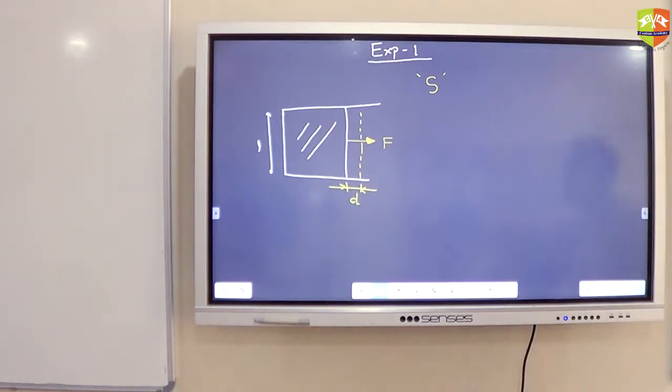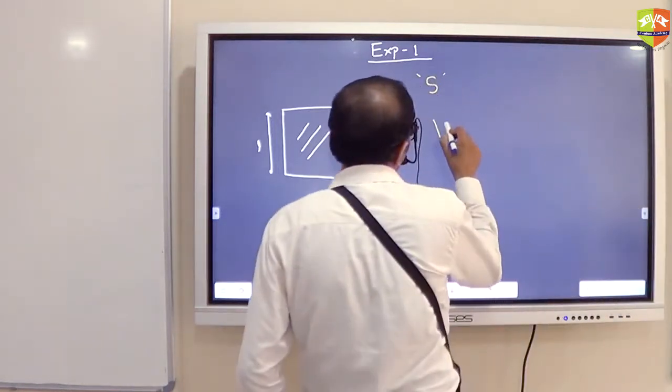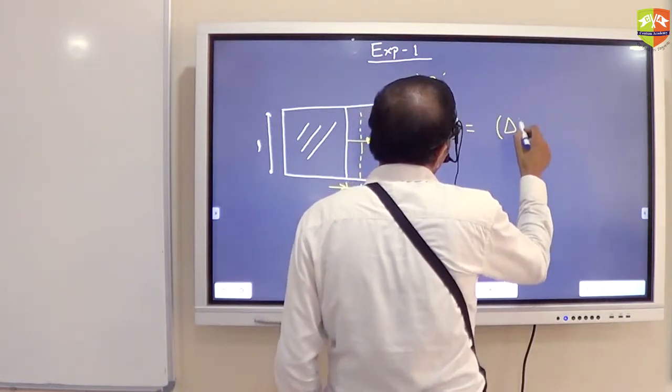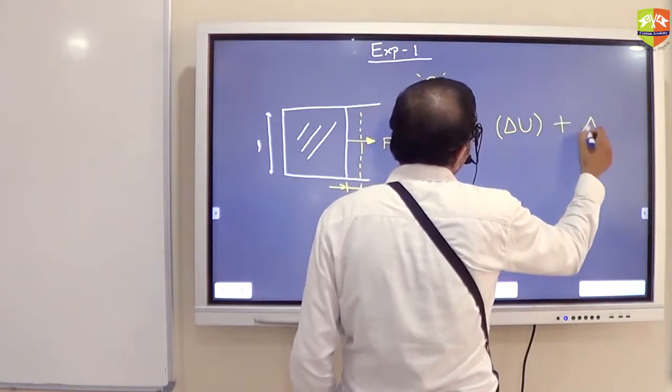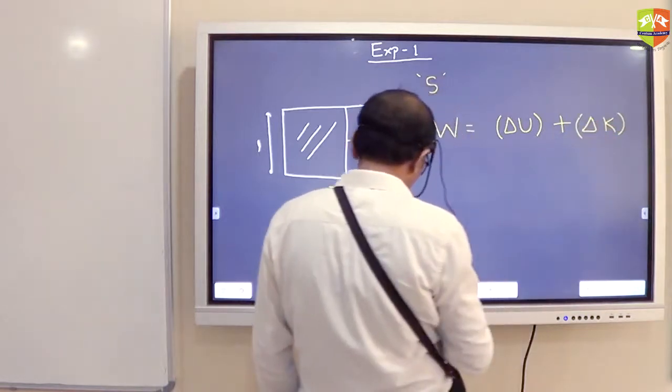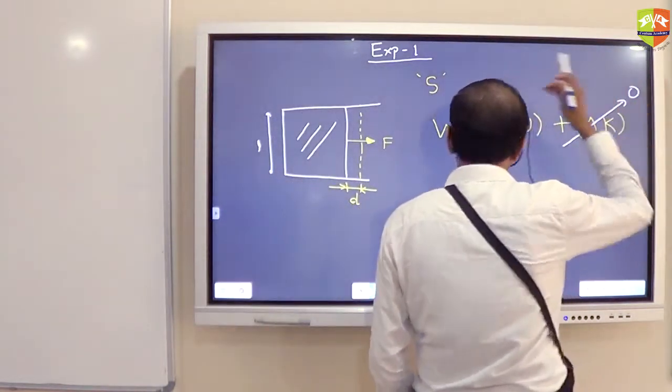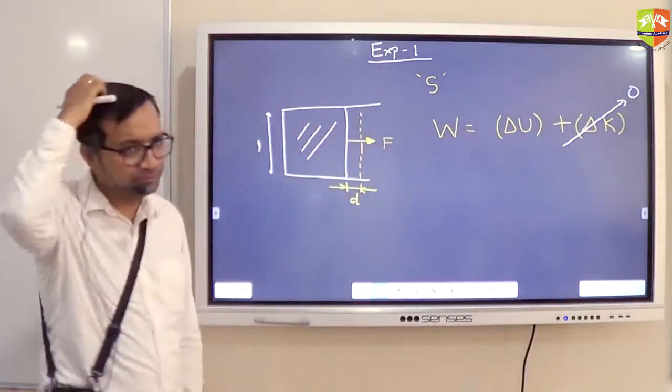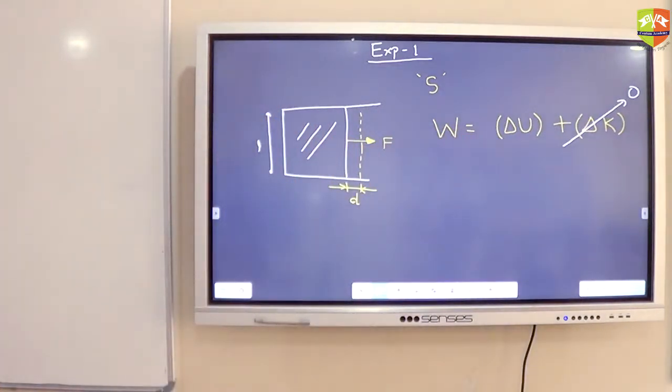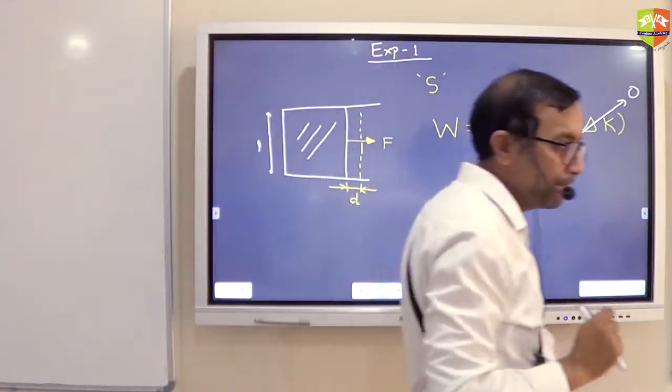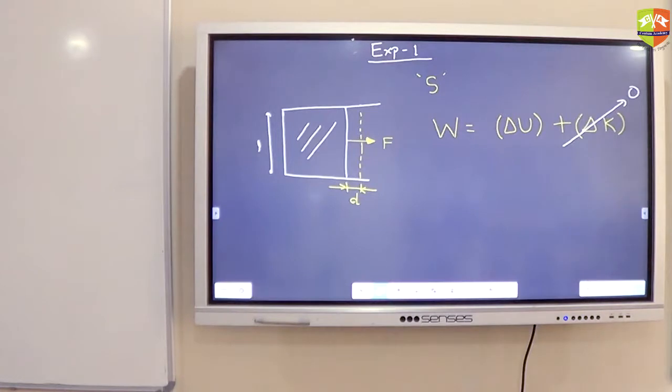What is work energy theorem? Work done is change in potential energy plus change in kinetic energy. Now change in kinetic energy has no meaning here. The mass of the film is almost zero and anyway it is not moving. So whatever work is done increases the energy of the film. Now what is the work done on the film?